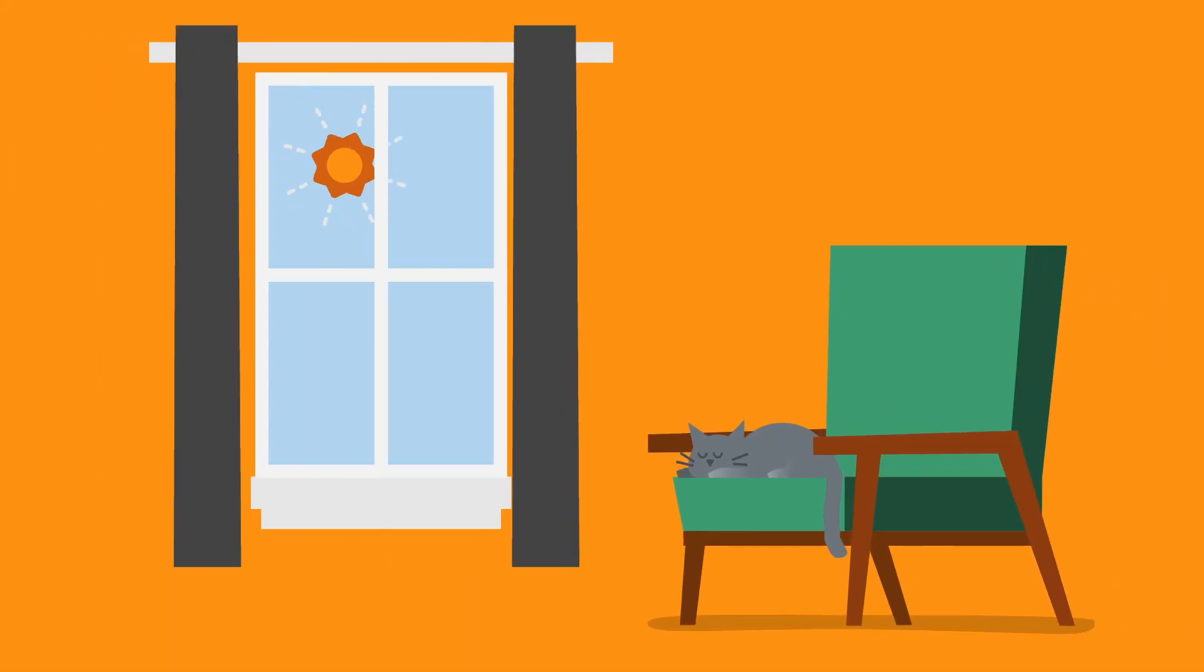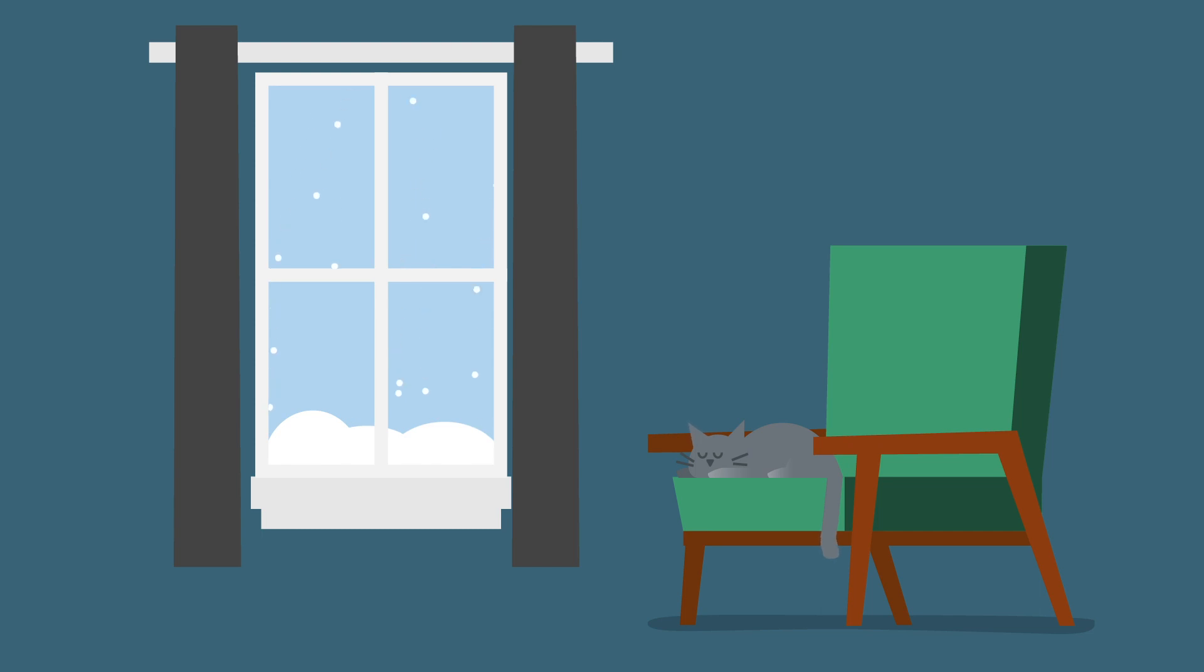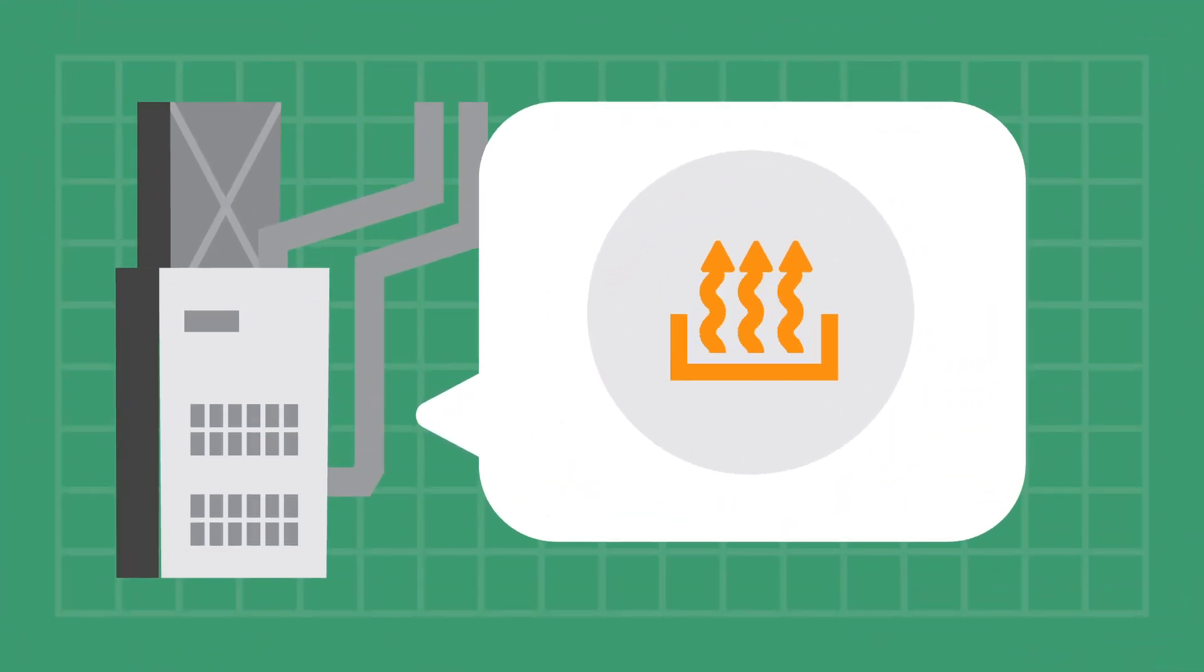Heat pumps can be used to both cool a home in the summer and heat a home in the winter. Instead of generating heat, like a furnace or a boiler, a heat pump transfers heat between indoor and outdoor air.